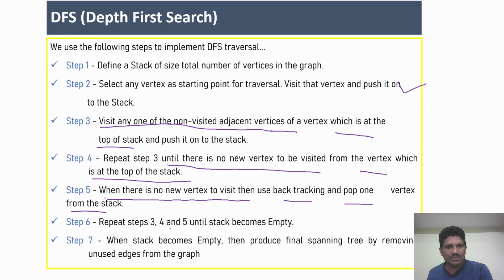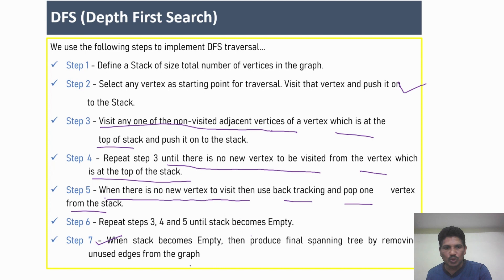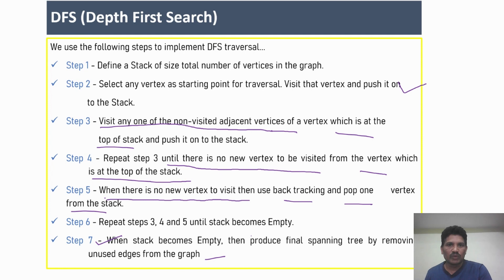Repeat steps three, four, and five until the stack becomes empty. When the stack becomes empty, you produce the final spanning tree by removing unused edges from the graph. I will also explain this once again.